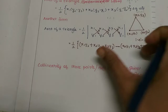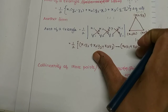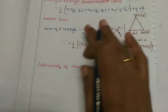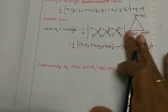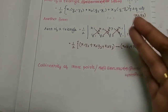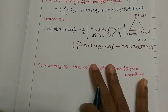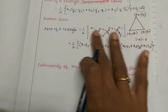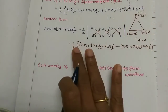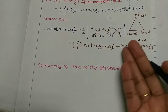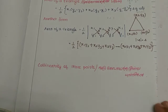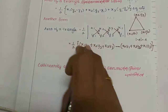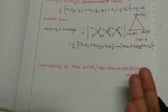If we use this formula, we can find the area of the triangle. We can substitute the x1, x2, x3 points and multiply directly. If we simplify, we get the value of the area of the triangle.